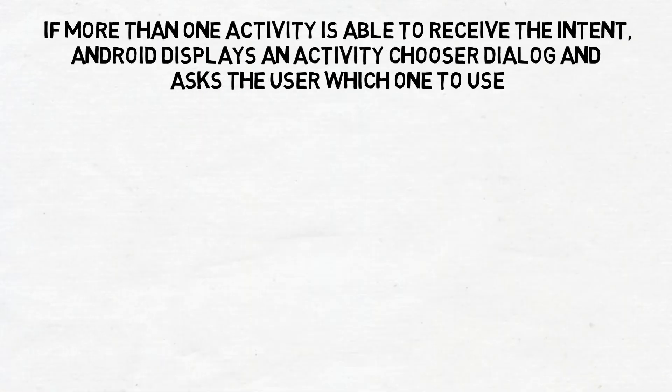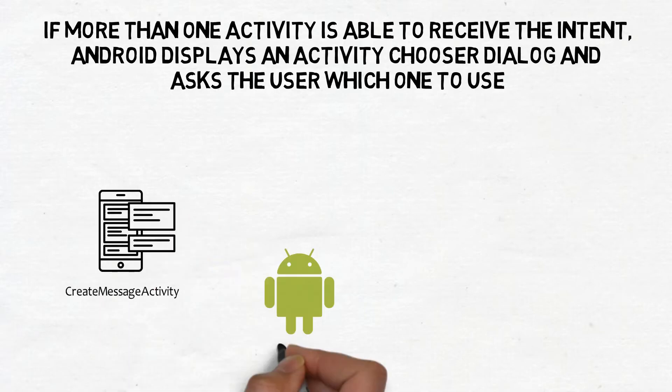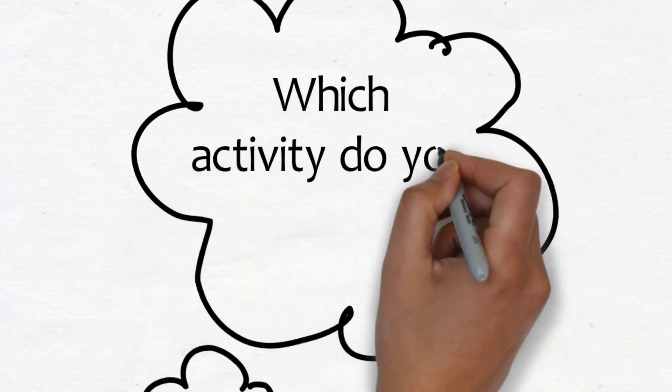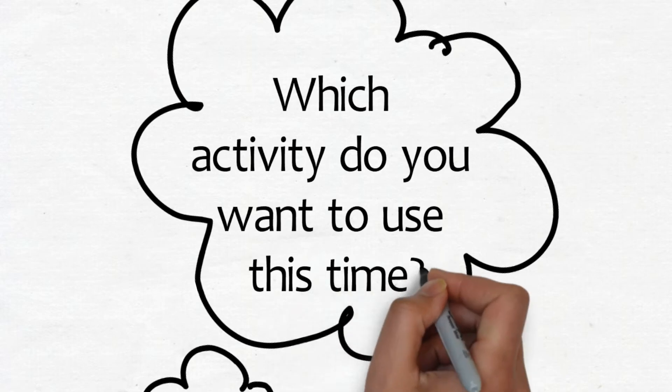If more than one activity is able to receive the intent, Android displays an activity chooser dialog and asks the user which one to use. This time, it doesn't give the user the option of always using a particular activity and it displays send a message in the title.